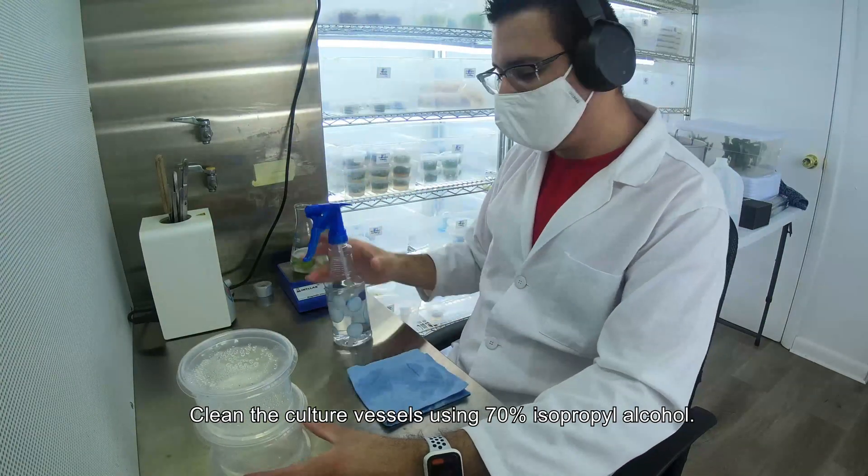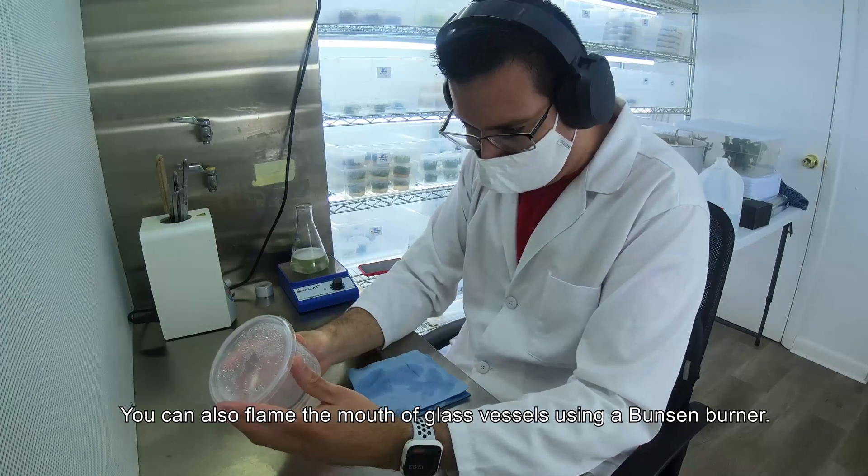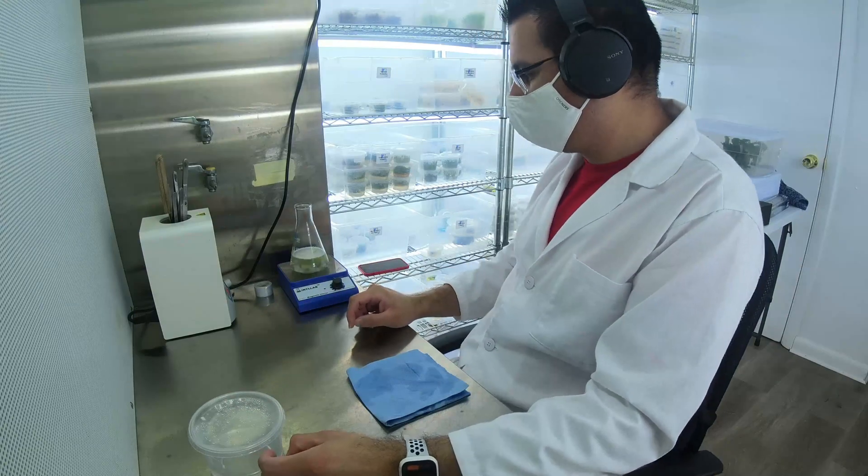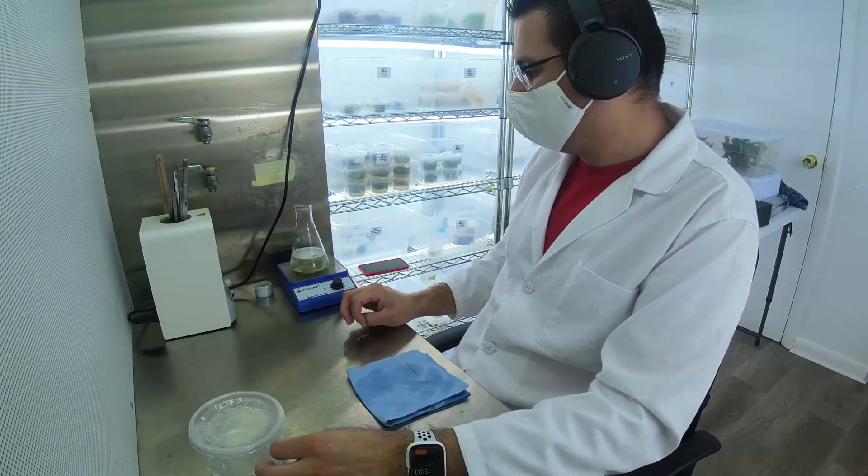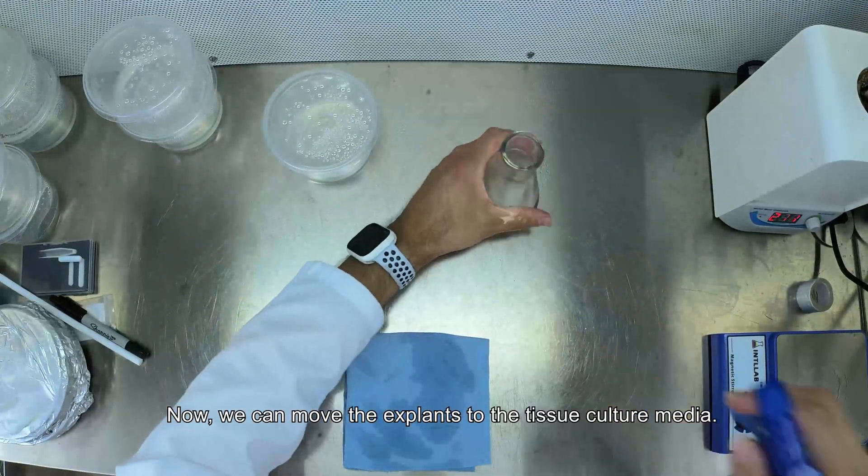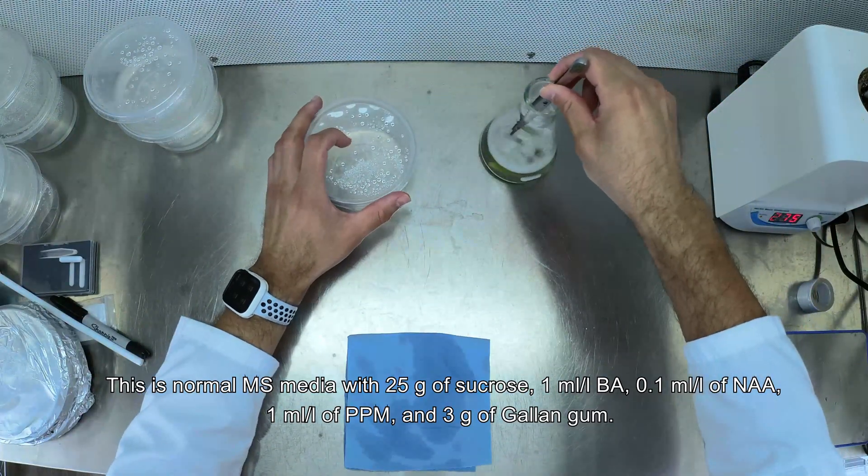Clean the culture vessels using 70% isopropyl alcohol. You can also flame the mouth of the glass vessels using a Bunsen burner. Now we can move the explant to the tissue culture media. This is normal MS media with 25 grams of sucrose.